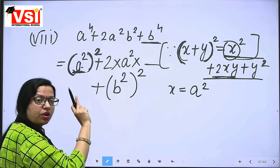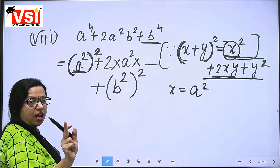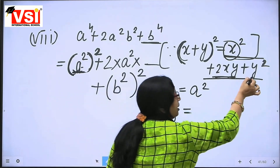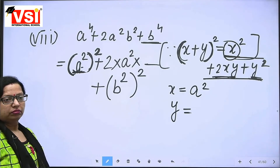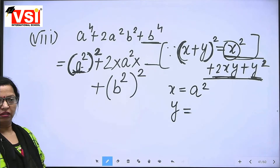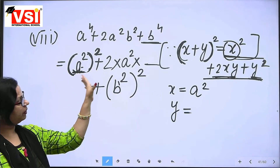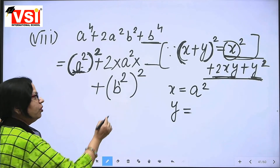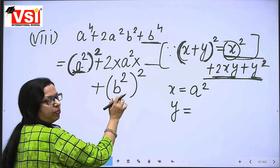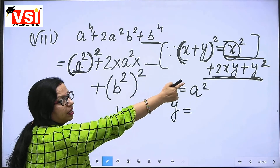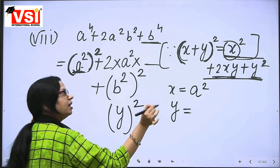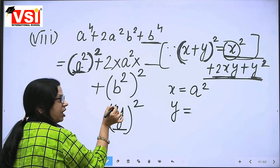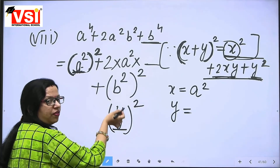This thing is clear — how we wrote it in whole square form. Now just tell me one thing quickly and your sum will be finished. What is the Y value here? Y square is written for Y whole square. So what is Y value? Tell me — Y value? B square.